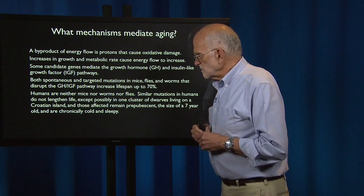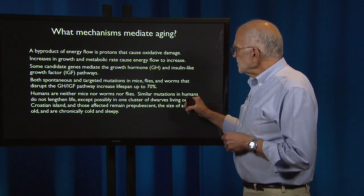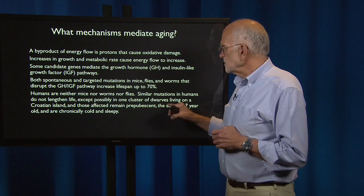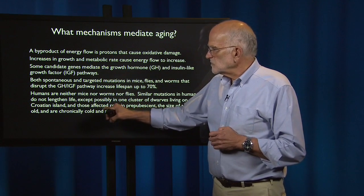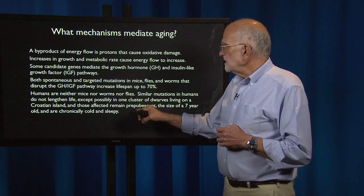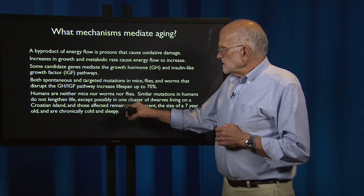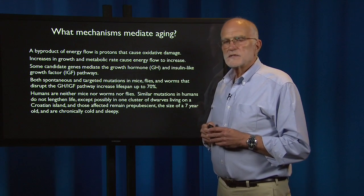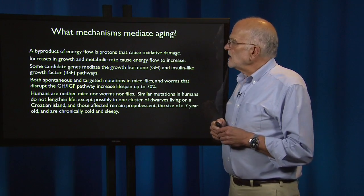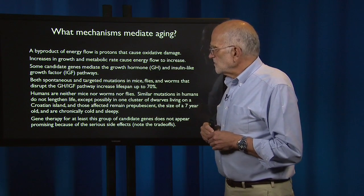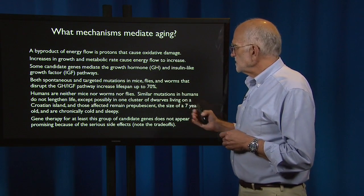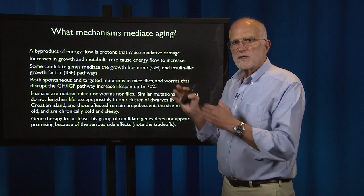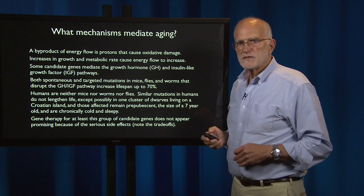Humans are neither mice nor worms nor flies. Similar mutations in homologous genes do not lengthen life, except possibly in one cluster of dwarves who live on an island in Croatia. These people are affected in bad ways: they remain prepubescent, remain the size of a seven-year-old, and are chronically cold and sleepy. So this is not a candidate for gene therapy in humans, at least not in any simple way, because mutations in these genes have quite negative consequences for several traits.